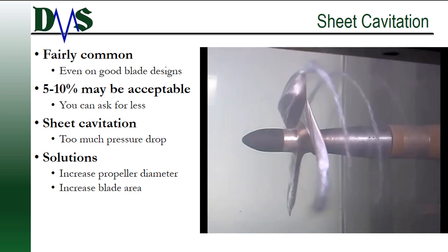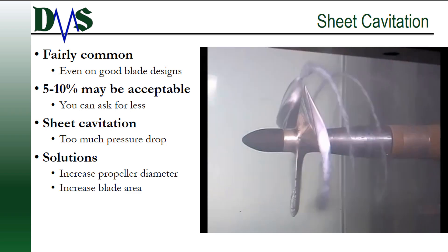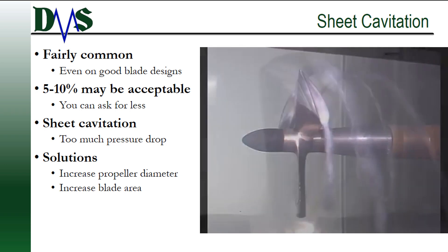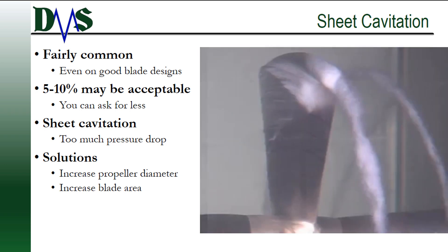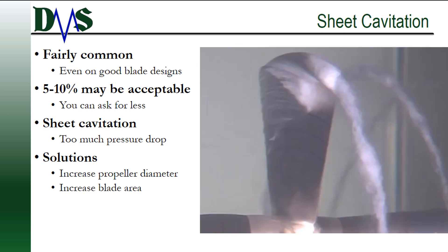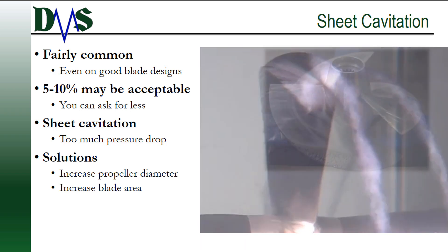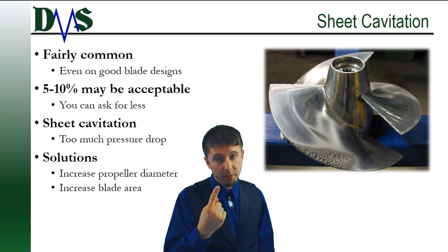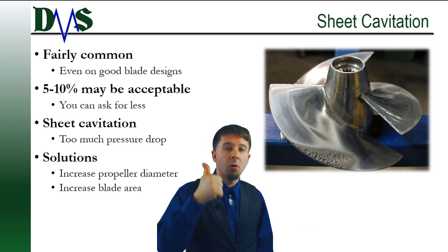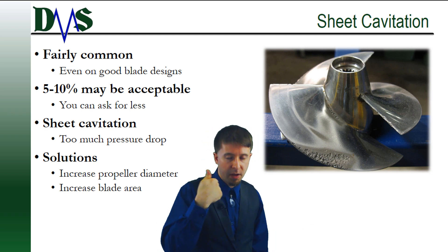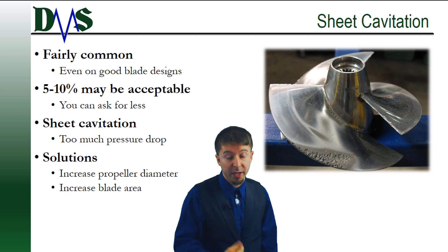Sheet cavitation signals that the propeller itself — the entire thing — is trying to generate too large of a pressure drop. You're trying to fit too much thrust into too small of a blade area. There are really only two possible solutions to that: increase the propeller diameter or increase the blade area. Either way, you're looking at changing the propeller blade.